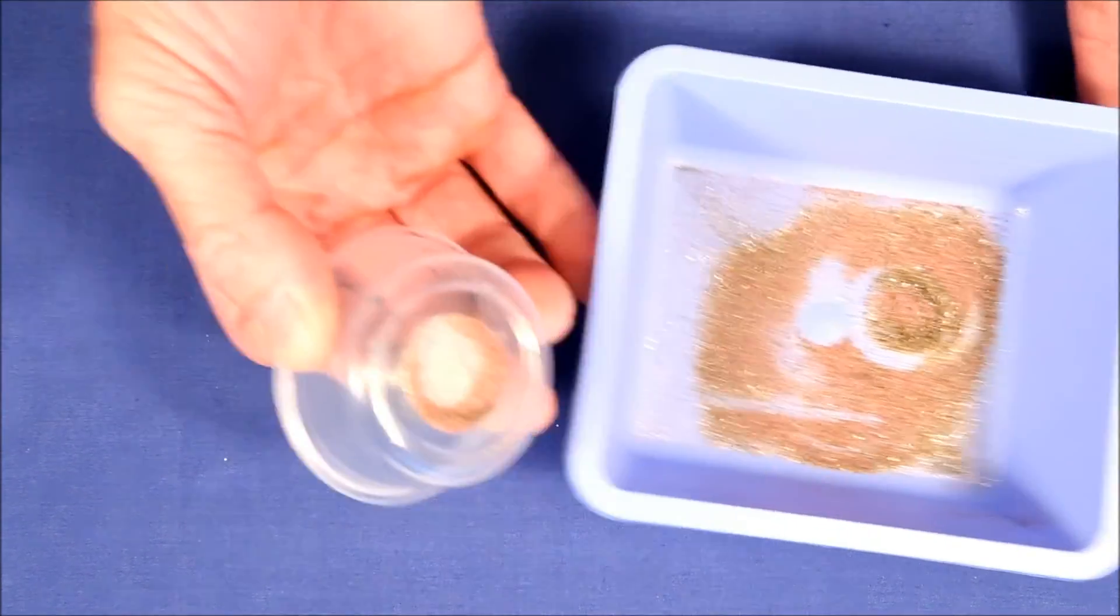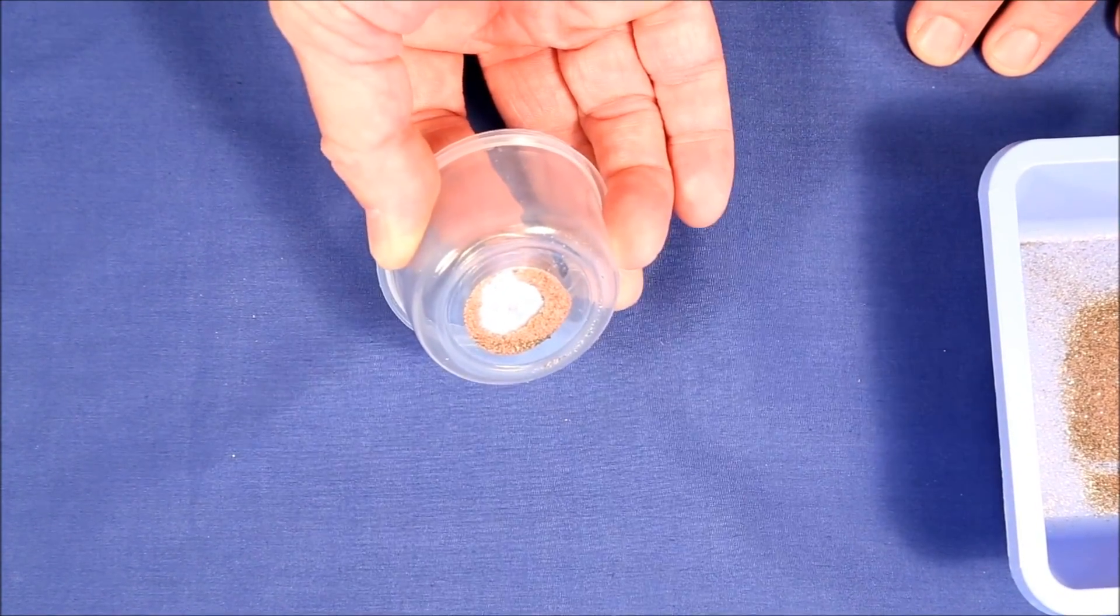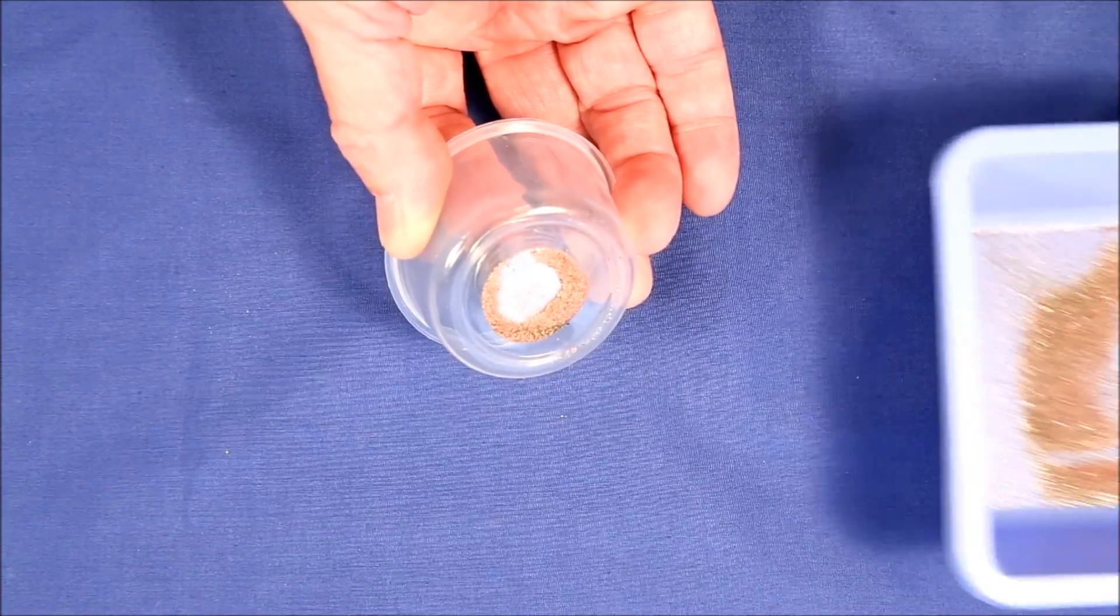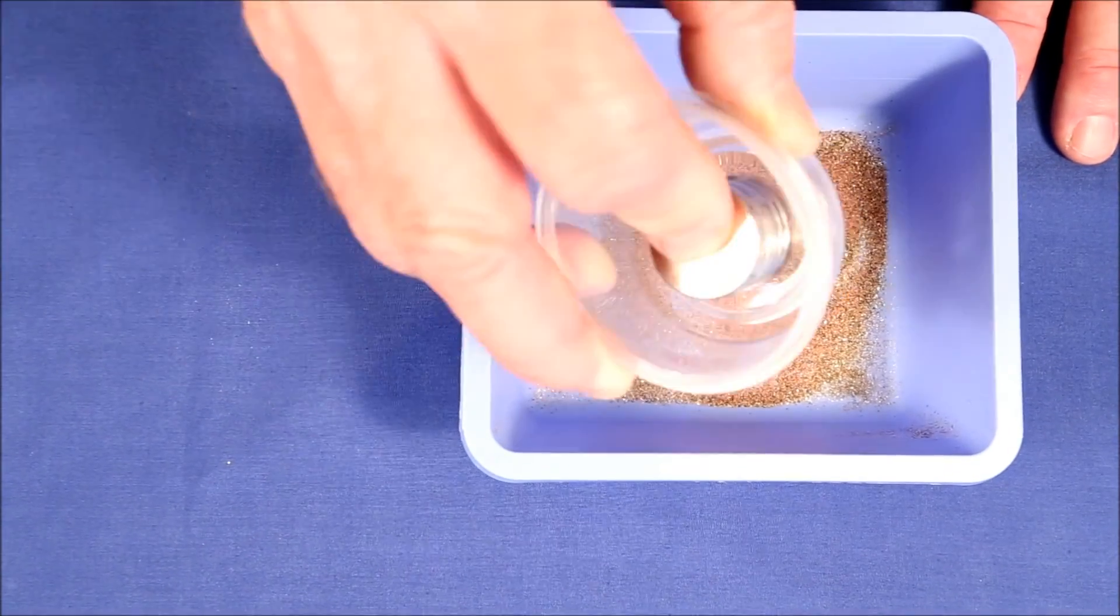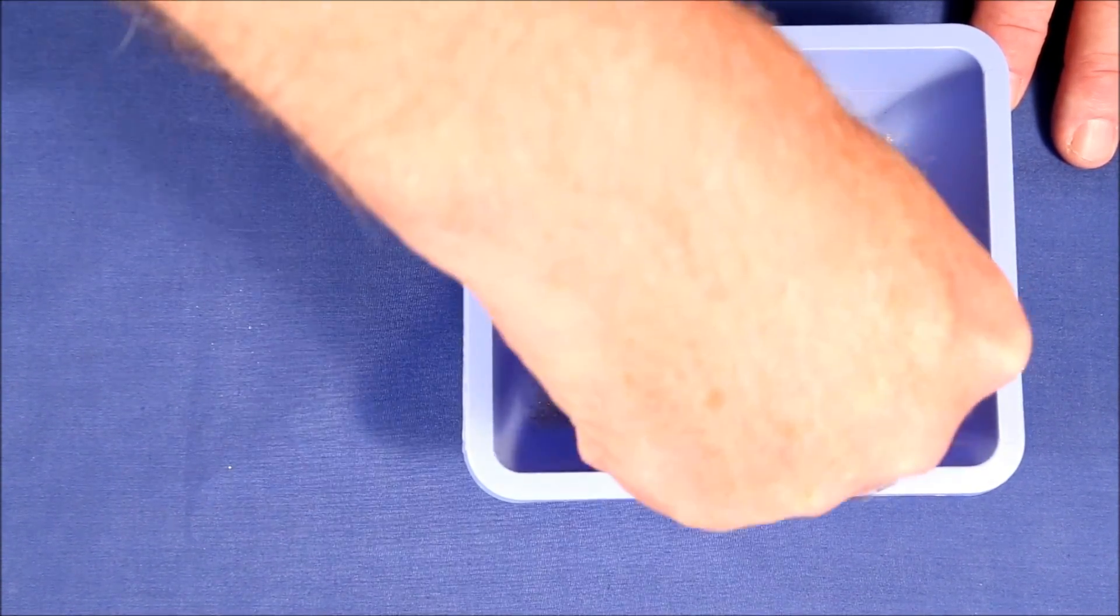And as you can see, the garnet sand is picked up by the magnets. It's actually a little bit more magnetic than quite a bit of the hematite, so that's really interesting.